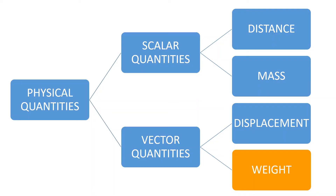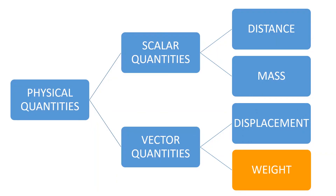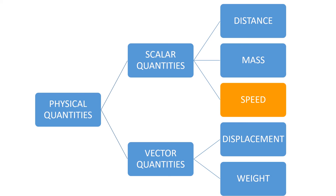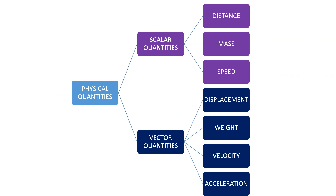The same thing happens with speed. Speed does not give direction, so speed is a scalar quantity. However, when that speed is accorded direction, it's what we call velocity. Of course, there are also other examples of scalar and vector quantities. So that's it with the difference between scalar and vector quantities.